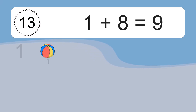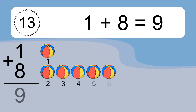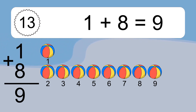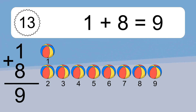1 plus 8 equals what? 1 plus 8 equals 9. Let's count it. 1, 2, 3, 4, 5, 6, 7, 8, 9.